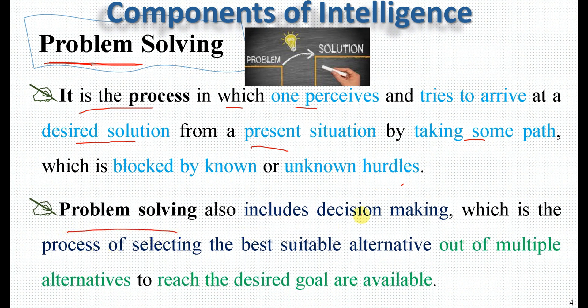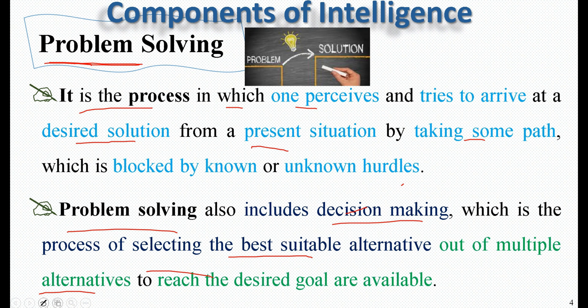Problem solving also includes decision making. Decision making is a process of selecting the best suitable alternative out of multiple alternatives — the best solution, which may be optimal by time, complexity, or cost. You select the best suitable alternative in order to reach the desired goals.